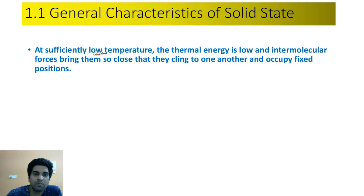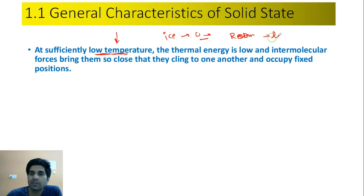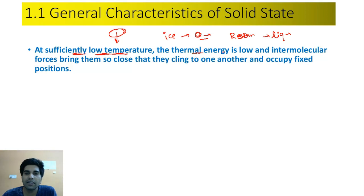At sufficiently low temperature, the substance exists in solid state. यह low temperature कितना होगा यह depend करेगा कि हम कौन सा substance ले रहे हैं। Example के रूप में — ice zero degree या उससे कम पे solid होती है; at room temperature और one atm pressure पे ice liquid यानी water बन जाती है। कई substances room temperature पे या high temperature पे भी solid होते हैं। यह sufficiently low temperature substance की nature पर depend करता है।